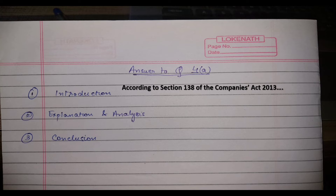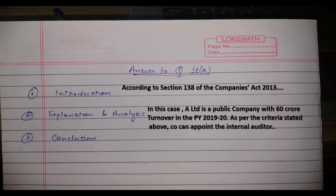Second, you have to explain and analyze the question — how the given facts fit within that section. In this case, you write: 'Given A Limited is a public company with a gross turnover of 60 crores in the previous year 2019-20. As per the criteria stated above, a company is required to appoint an internal auditor if its paid-up capital is more than 50 crores.' You can explain this in paragraphs.